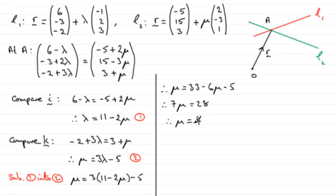Now I can substitute mu equals 4 back into equation 1, and it will give me lambda. So if I sub in equation 1, we get that lambda equals 11 minus 2 lots of 4. 11 minus 8, so that gives us lambda equals 3.